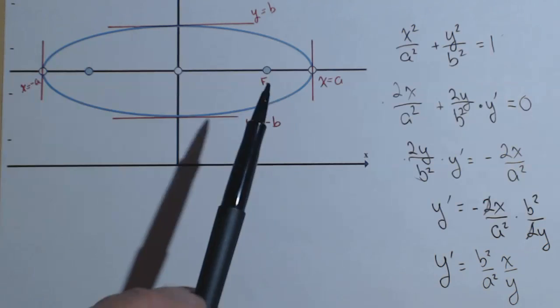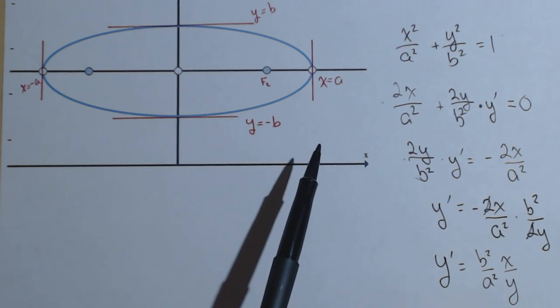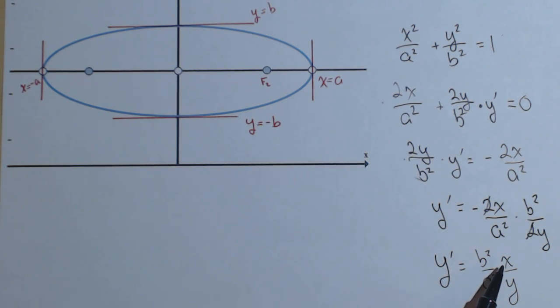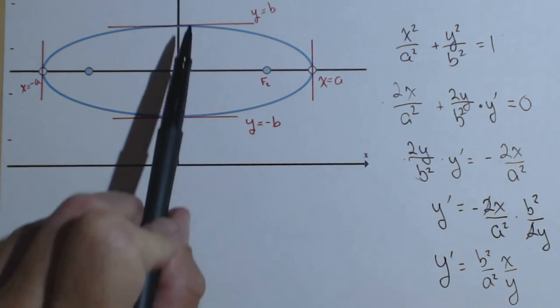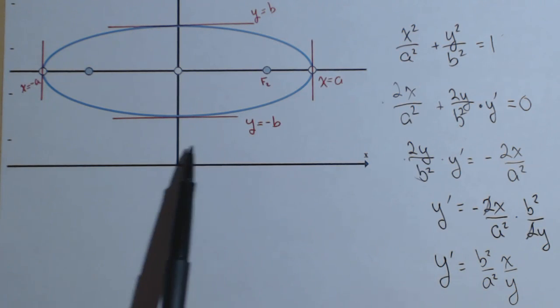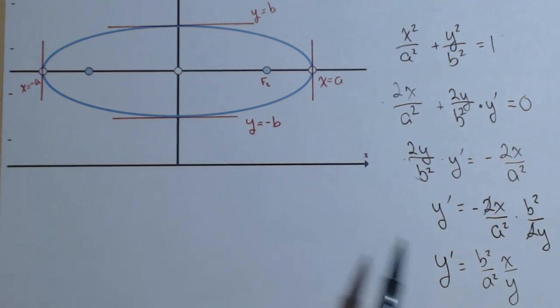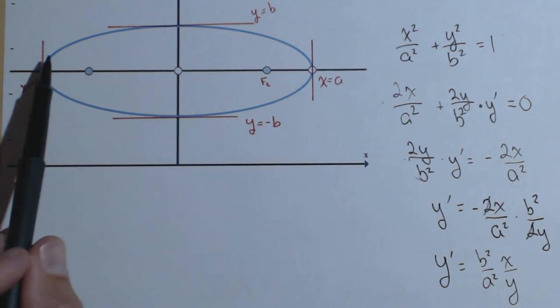Now let's just kind of verify this. First off, that means if x is 0, notice we'll get a slope of 0. Well, if we're on the y-axis, we see that our slopes are 0. If y is 0, in other words we're on the x-axis, we get an undefined slope. That makes sense, because our tangent lines are vertical.